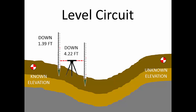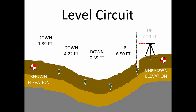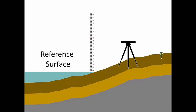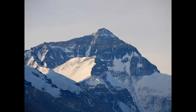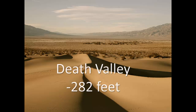In the first video, we illustrated the concept with the carpenter level, but now we do the same process on a grander scale with an optical level. To find an unknown elevation shown here on the right, we must first start from an elevation that is known, shown here on the left. An elevation is a vertical distance above or below a reference surface. We commonly use mean sea level as a reference surface. For instance, the summit of Mount Everest is 29,029 feet above mean sea level, and the lowest point in the United States is Death Valley at 282 feet below sea level.